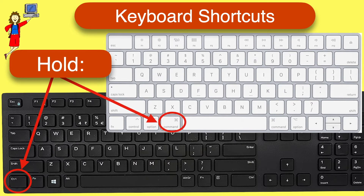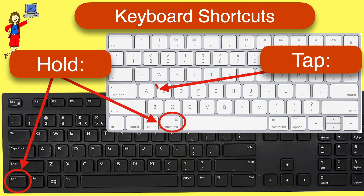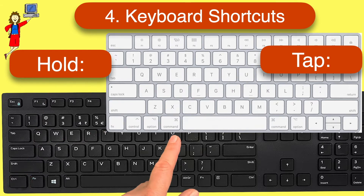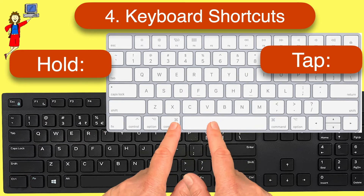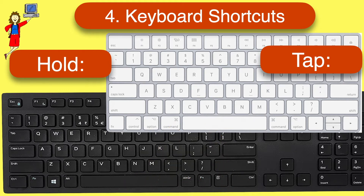All you do is hold the first key down and tap the second key. Once you've tapped the second key, you can release both. Okay, let's continue with our selecting.